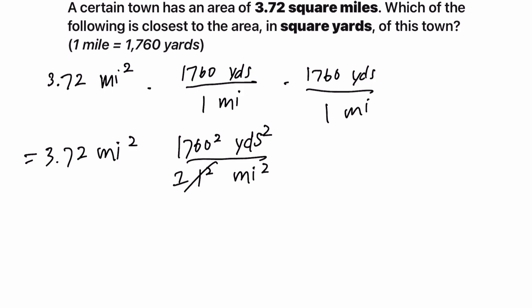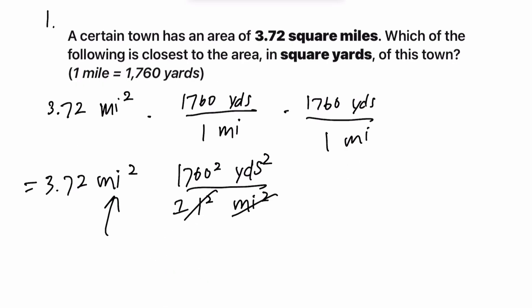So miles, let's say miles is like x, right? And we have x squared in the numerator right here. We also have x squared in the denominator. So the x squared is canceled out. So just like variables, these miles squares will cancel out.